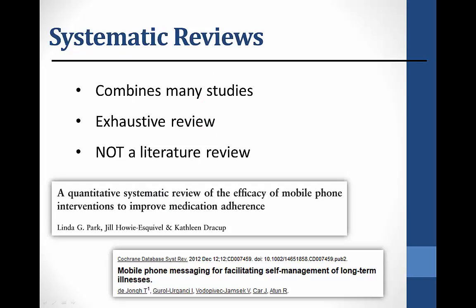When it comes to finding evidence-based information, systematic reviews are one of the biggies. A systematic review is usually written by a group of researchers, sometimes including a librarian, who provide an unbiased, comprehensive review of all relevant studies on a particular clinical or health-related topic or question. They are supposed to review all the information from both published and unpublished studies. Seriously, who is going to review everything on a topic? Well, these groups do — it's why it can take up to two years or even longer to complete a systematic review.